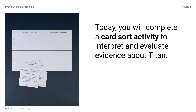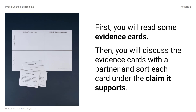Today you will complete a card sort activity to interpret and evaluate evidence about Titan. First, you will read some evidence cards. Then you will discuss the evidence cards with a partner and sort each card under the claim it supports. Once you decide with your partner, you will place that evidence card under the claim it supports. If both claims are supported, place the card in the middle. Sorting this evidence will help you explain your ideas about the Titan mystery.